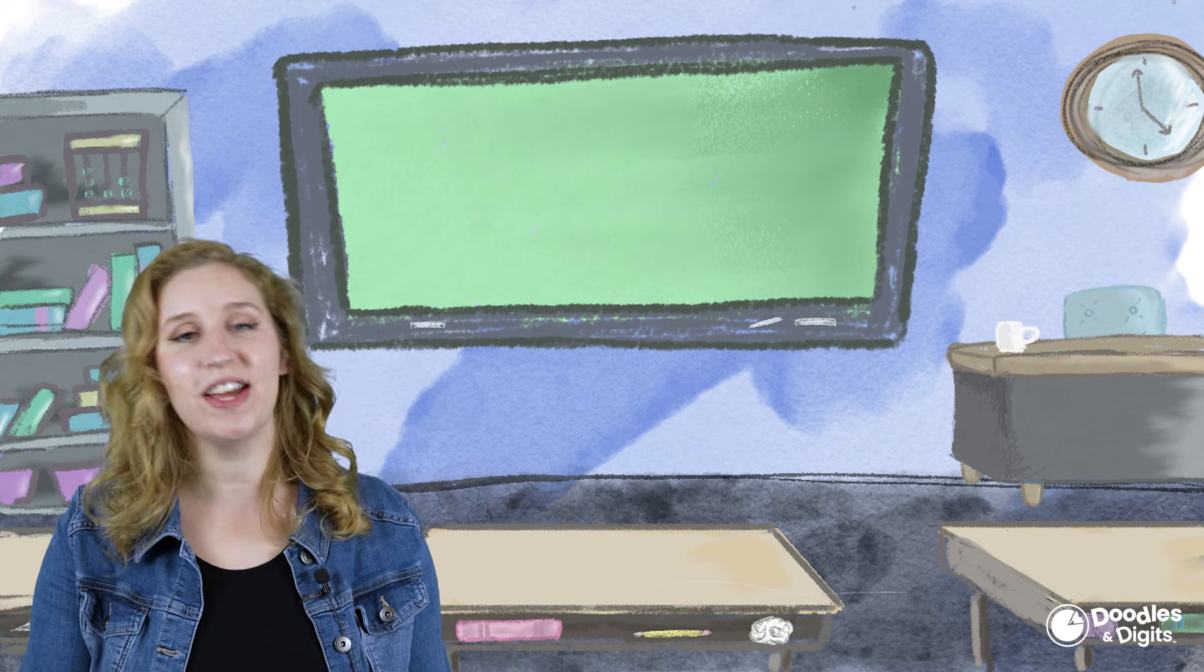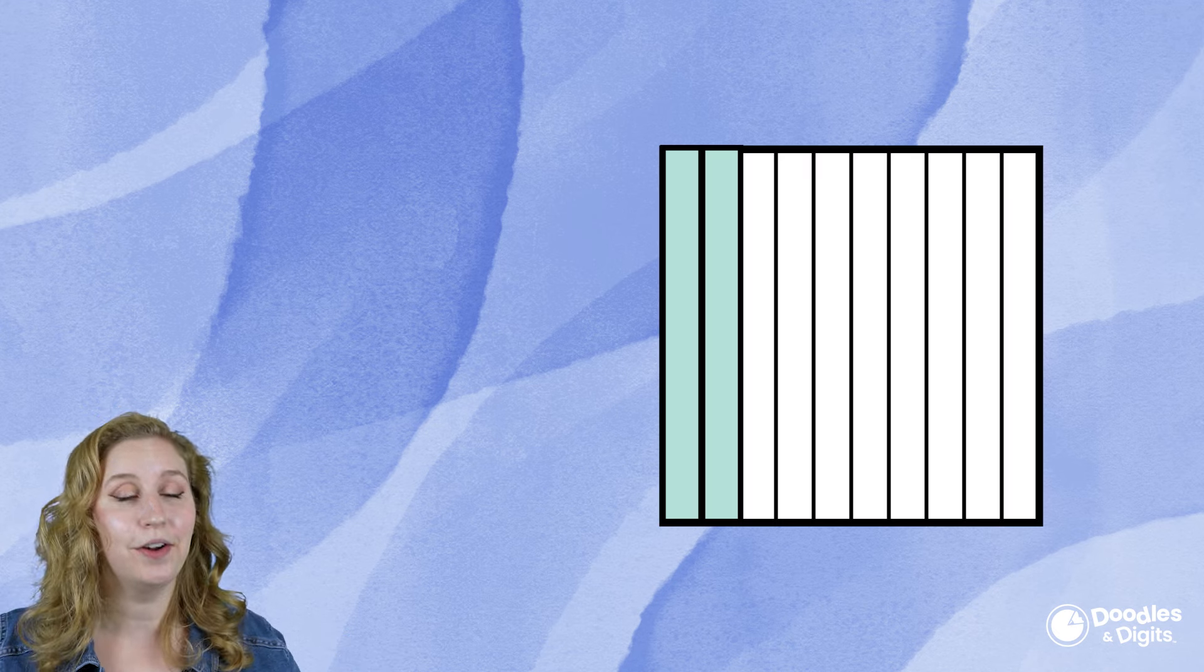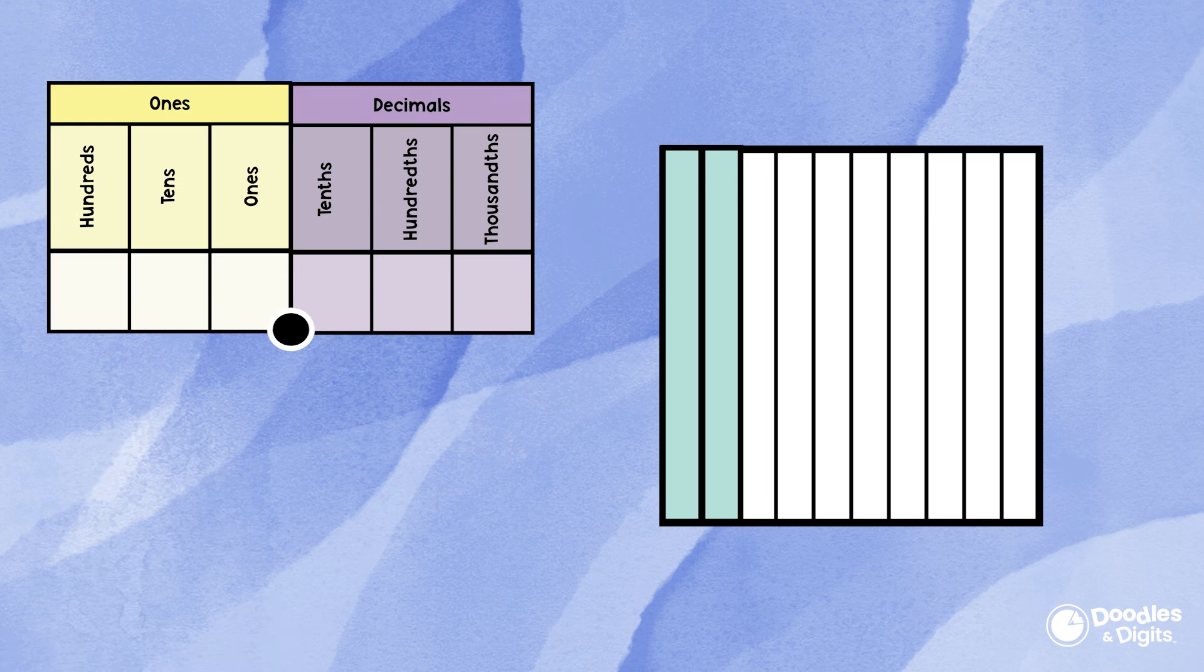There's actually a few different ways we can show decimal place value. The first is with models. Let's see if we can figure out what decimal this model is showing. What do you think? Use the place value chart to help you.